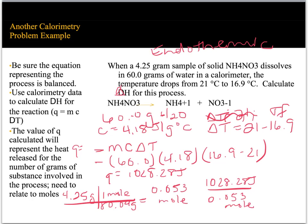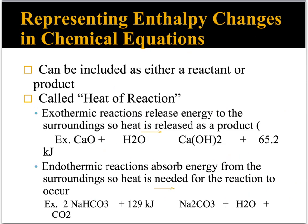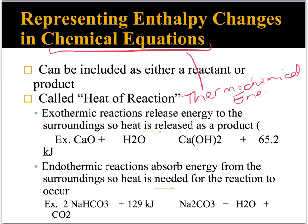For 1 mole, that would be 19,401.5 joules. When we represent enthalpy changes in chemical reactions, they're either going to be represented as a reactant or a product. These are called thermochemical equations — not just a chemical equation anymore — because when you add the enthalpy change, you're including energy representations. People will also sometimes describe enthalpy as the heat of reaction.